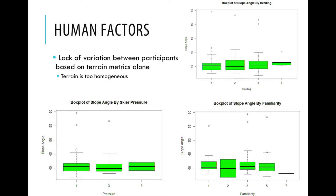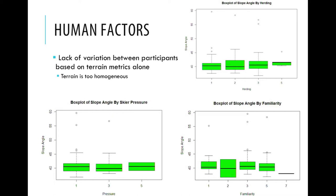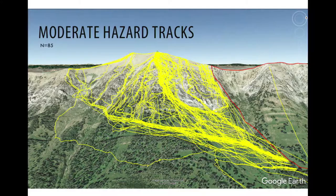We're hoping to use travel behavior — where people are going based on their GPS track — to pull out things like whether a high level of education influences the slope angle and curvature of your track. Unfortunately, what we found is pretty flat trends across all three of these graphs, so we're not able to detect differences between groups based on terrain metrics. We think that's because the terrain is too homogenous — same aspect and all pretty steep. Even the safest line on Saddle Peak is well above 35 degrees, and the 2010 avalanche crown cut right across the middle of it.